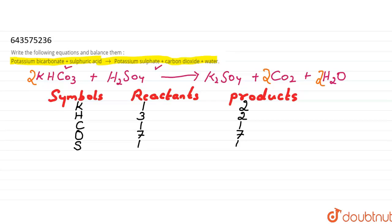Now let us count again after balancing. Potassium: two on the reactant side and two on the product side. Hydrogen: two plus two equals four on the reactant side, and four on the product side. So hydrogen is now four and four — potassium and hydrogen are both balanced.